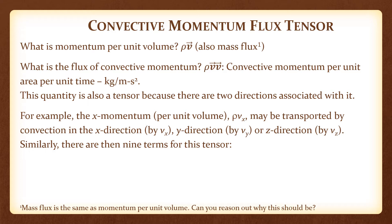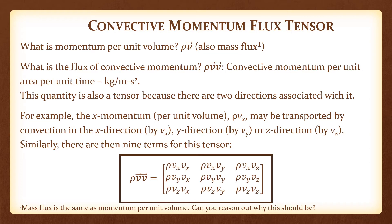So there are nine terms for this tensor: ρVxVx, ρVxVy, ρVxVz — that is ρVx transported in the i, j, k directions respectively — and similarly for ρVy and for ρVz.